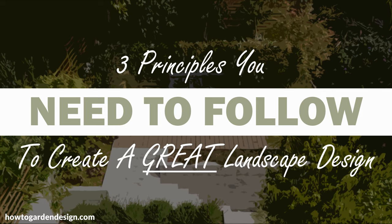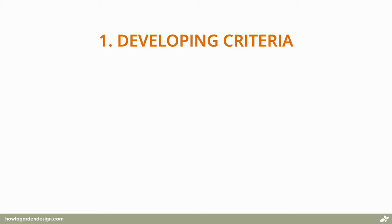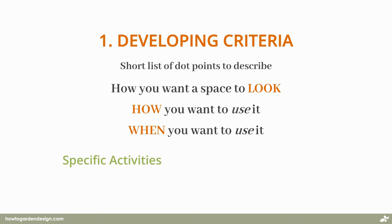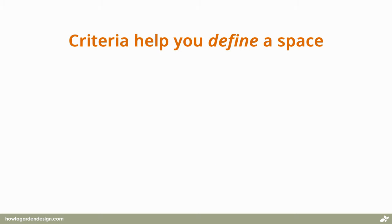So, what are the principles you can follow to help create your own garden design? The first is what I call developing criteria. Criteria are a short list of dot points that you put together to describe how you want a space to look, how you want to use it, and when you want to use it. I generally only develop criteria for the main areas I want in a design, for specific activities that I want to enjoy, or main visual features I want to include in my yard. Criteria help you define a space, which is very useful when designing, because it ensures that your design works.